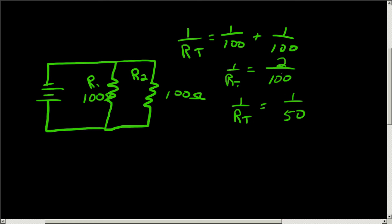And then we can say that that is 1 over 50 if we want to simplify that fraction. Now, if we take the inverse of the total, we have RT equals, well, the inverse of 1/50 is going to be 50 ohms.